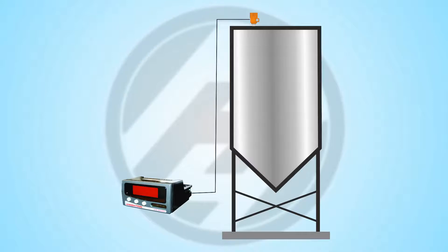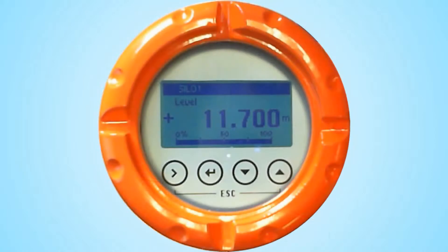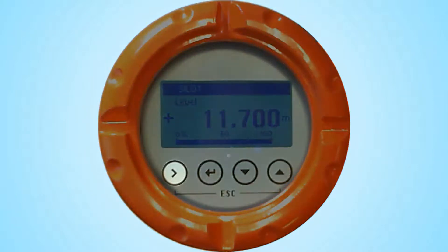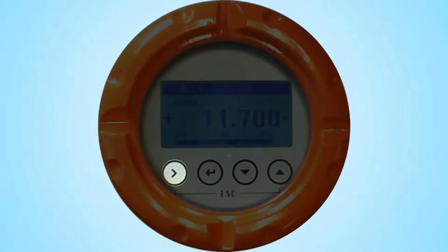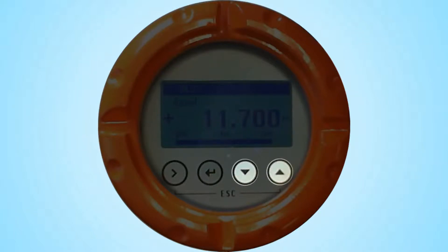We will cover programming of the high control digital displays in a later video. Before programming the unit, take a moment to familiarize yourself with the display keypad buttons. These require a magnetic pen to use, or you can remove the lid with the special tool provided and press the buttons. The right arrow key enters program mode submenus and moves the cursor to the next digit. The return key confirms changes and exits the current menu. The up and down arrows change the display screen in run mode and increase or decrease the value in program mode.